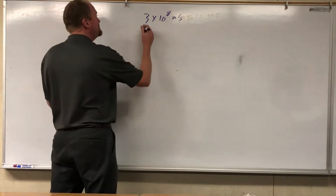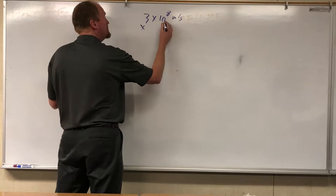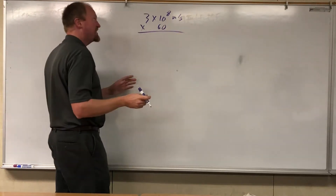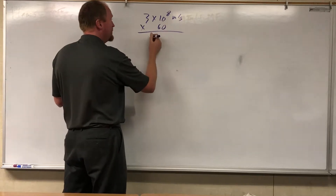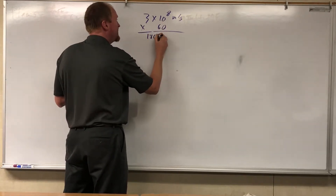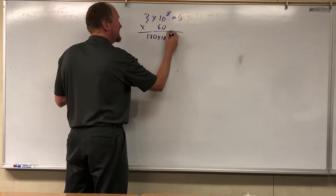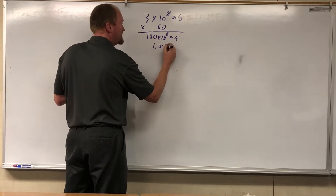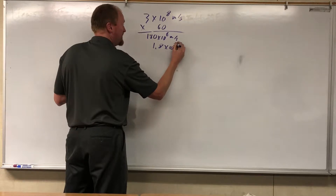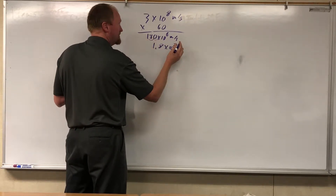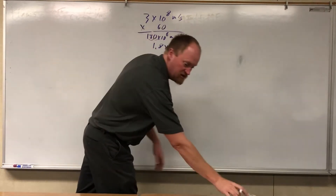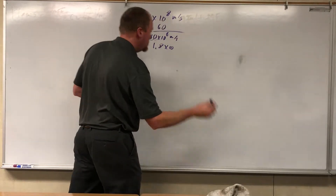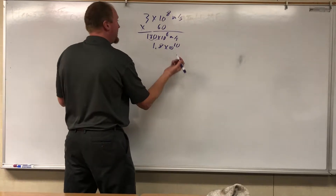So we're going to convert this into light minutes. There are 60 seconds in a minute, so if light goes this far in one second, in one minute — 60 times that — you get 180 times 10 to the 8th, or in scientific notation, 1.8 times 10 to the 10th meters. That is a light minute.